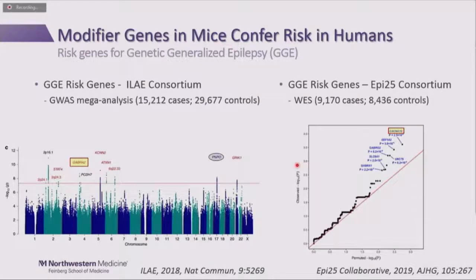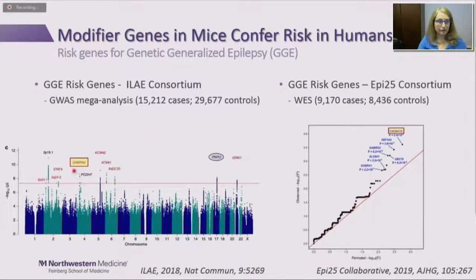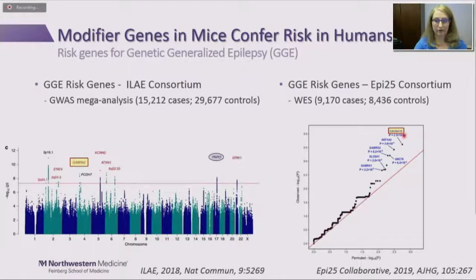We always need to go back to humans to make sure what we're doing has relevance to human epilepsies. We looked at risk genes for genetic generalized epilepsies found in two large GWAS studies that included 15,000 and 10,000 cases each. The genes we identified in a few hundred mice are popping up in these human studies: GABA2, the vitamin B6 pathway including PNPO, and CACNA1G, another modifier gene I didn't have time to discuss. We find genes in the mouse with a couple hundred mice and we're hitting the same things you can hit with 10 to 15,000 humans — so I think we're on the right path.